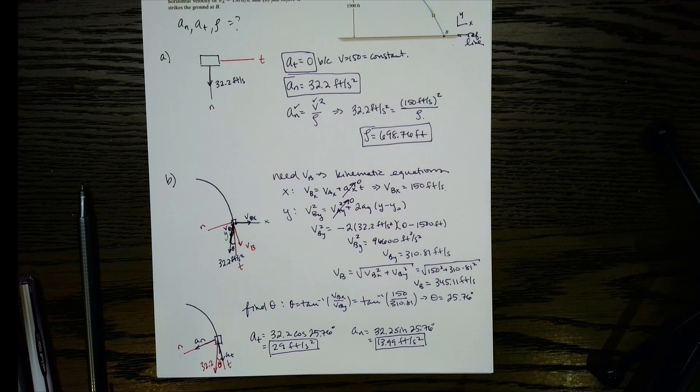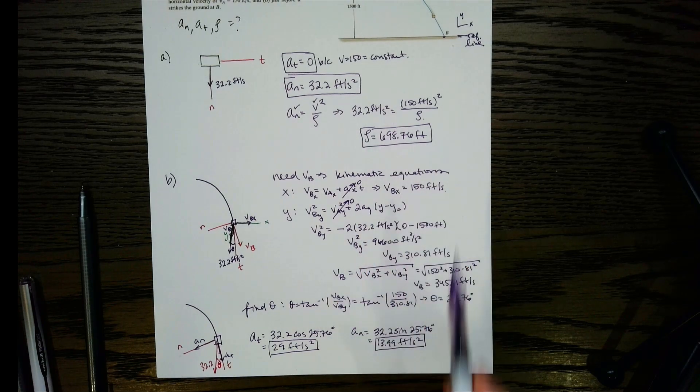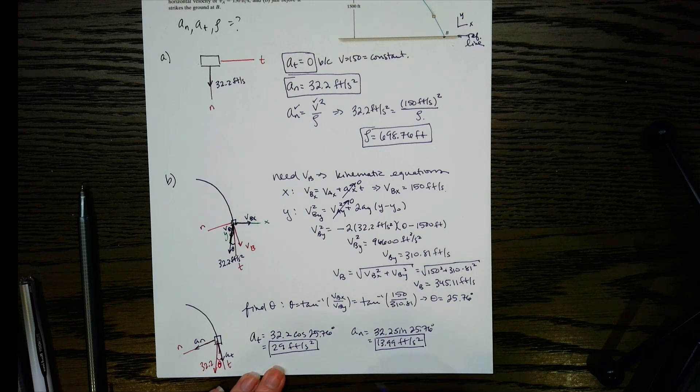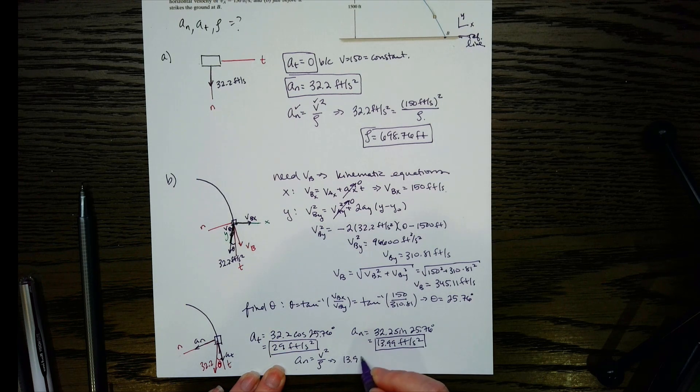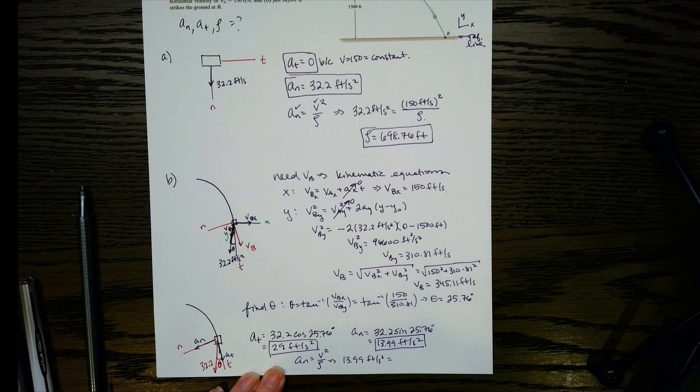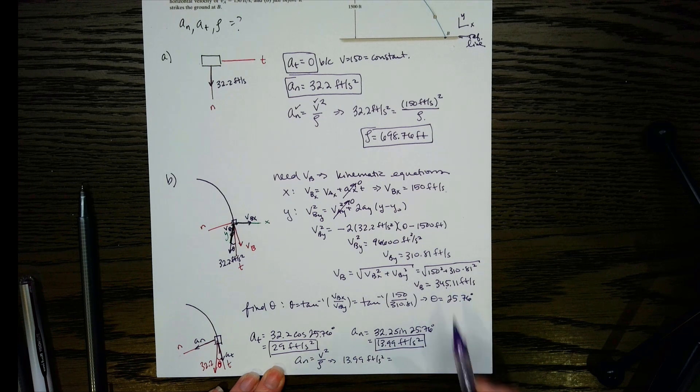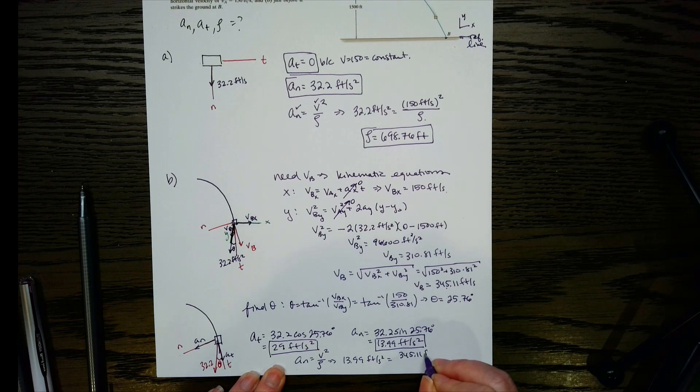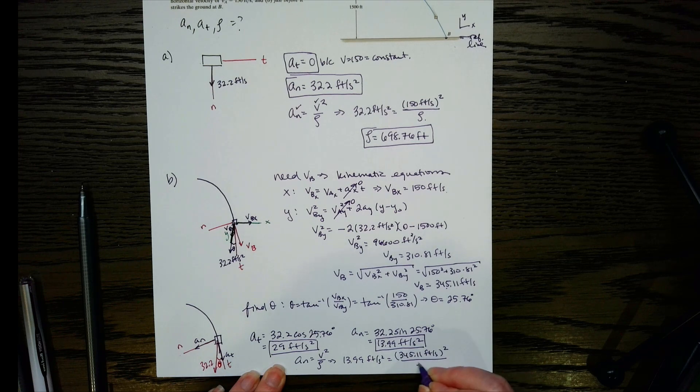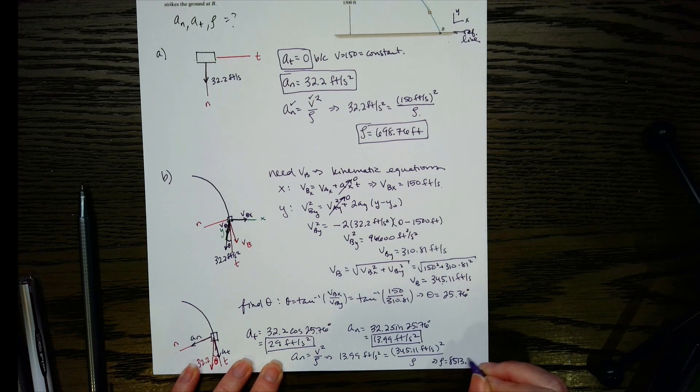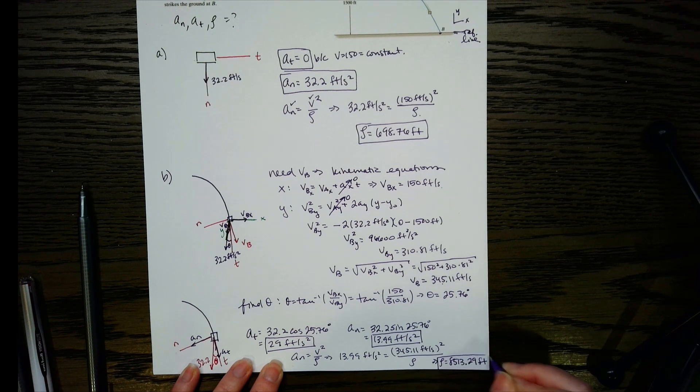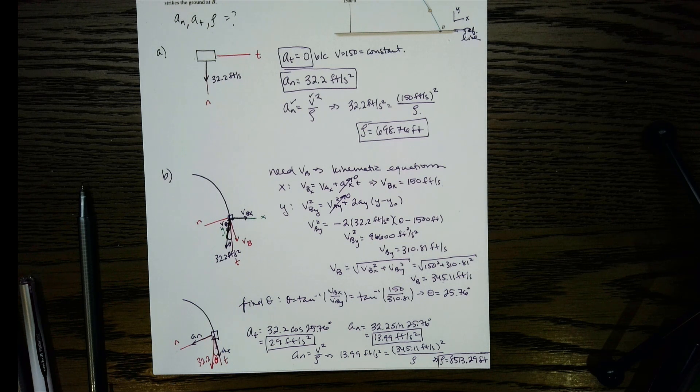The last thing we have to do is find rho. How can we find rho? We'll do the same thing we did up here. So AN has to be 13.99, and that has to equal V squared over rho. So we'll have our 13.99, and then we want the velocity at this point, so that's going to be the 345.11. And then we square it, put it over rho, and then you solve for rho, which is 8,513.29 feet. So there you have that one.